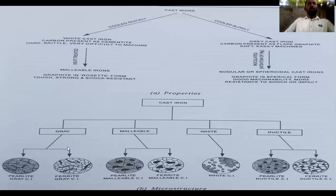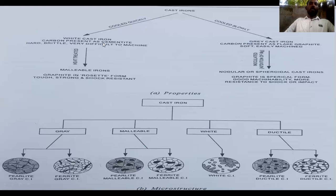Here is the microstructure of different types of cast iron. In gray cast iron, the microstructure shows a pearlite matrix with graphite flakes. In malleable cast iron, we can see a pearlite matrix as well. White cast iron and ductile cast iron microstructures also show pearlite-based structures. Fast cooling gives white and malleable cast iron; slow cooling gives gray and nodular cast iron.